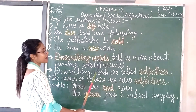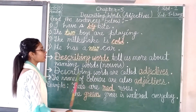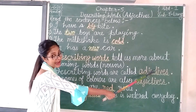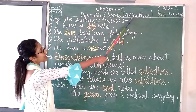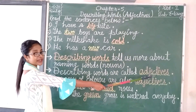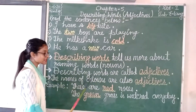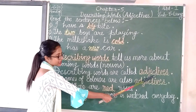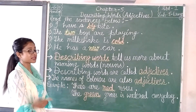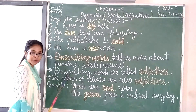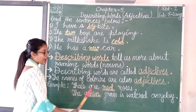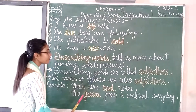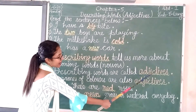So, describing words are called Adjectives. What is our topic today? Adjectives. If anyone asks you what is an Adjective, you can tell them: describing words are called Adjectives. Once again — describing words are called Adjectives.